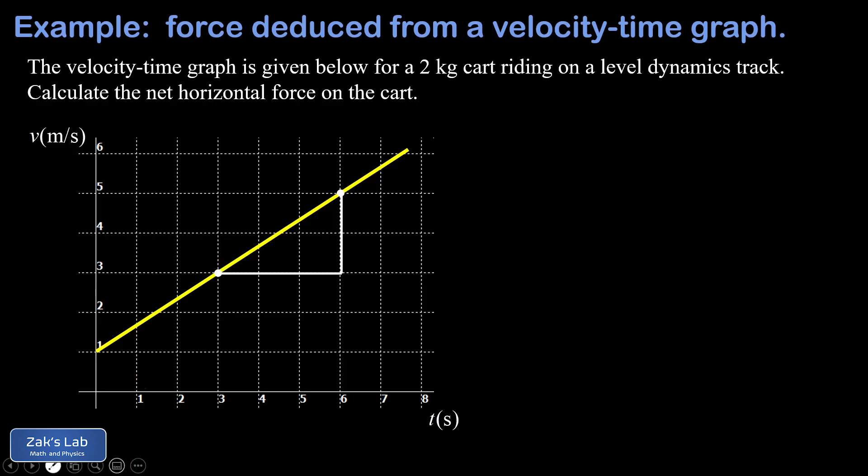To compute the slope, we can think about the rise over run between any two points on the graph, and we notice the graph is passing through several integer points. So I chose two specific points: the cart is moving at three meters per second when t is equal to three seconds.